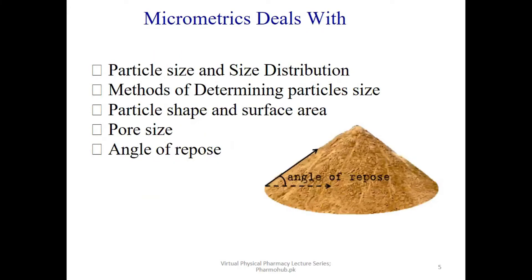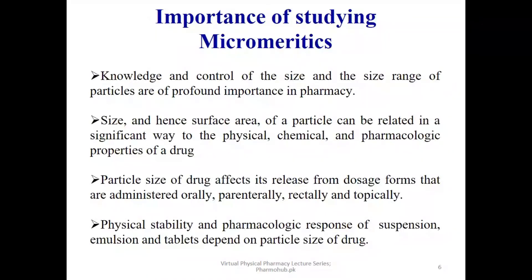Micrometrics deals with particle size and size distribution, methods of determining particle size and size distribution, particle shape and surface area, pore size and angle of repose. Angle of repose is basically the angle that is made by the material with respect to the horizontal when piled. The flow properties are related to the importance of studying micrometrics — particularly how much release will occur and at what rate.